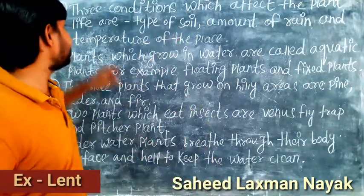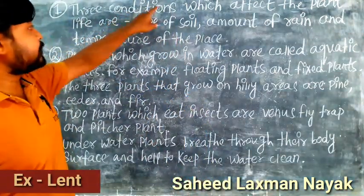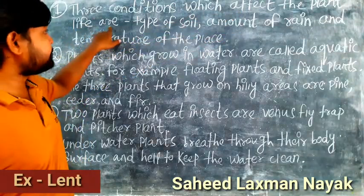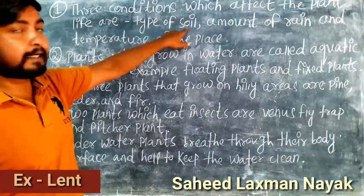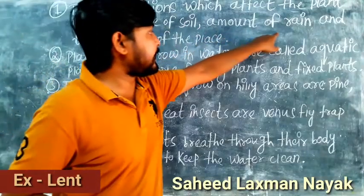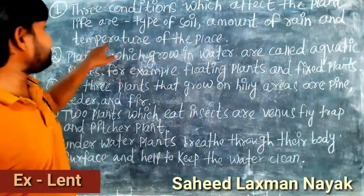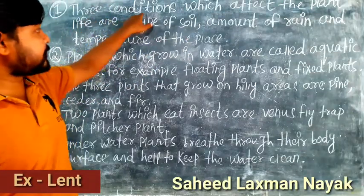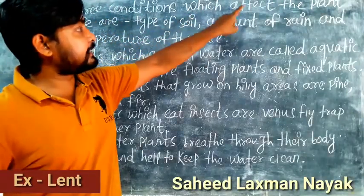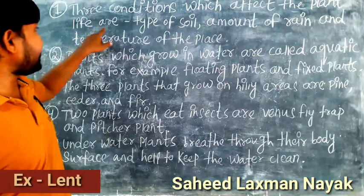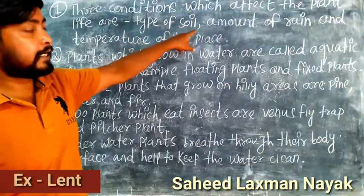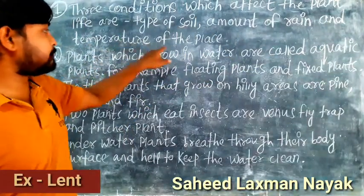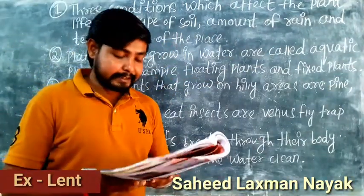The answer is: the 3 conditions which affect plant life are type of soil, amount of rain, and temperature of the place.